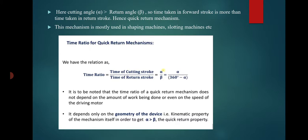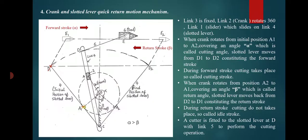This mechanism is mostly used in shaping machines and slotting machines. The time ratio of the quick return mechanism is the time of the cutting stroke divided by the time of the return stroke, which equals the cutting angle alpha divided by the return angle beta. Note that alpha is greater than 360 minus alpha, meaning beta is less than 360 minus alpha.